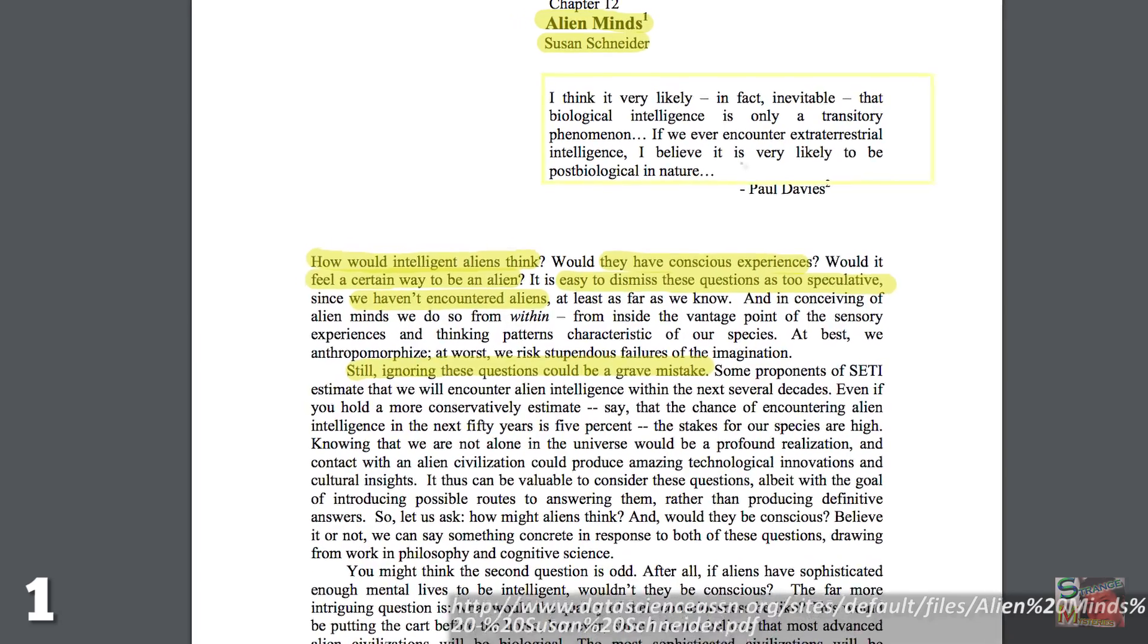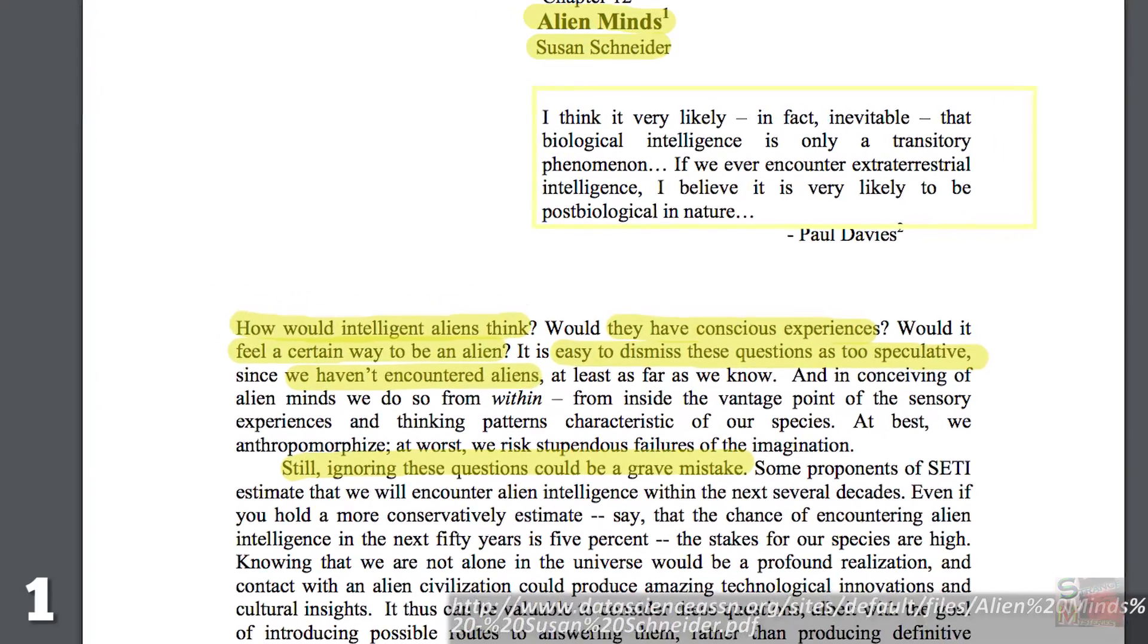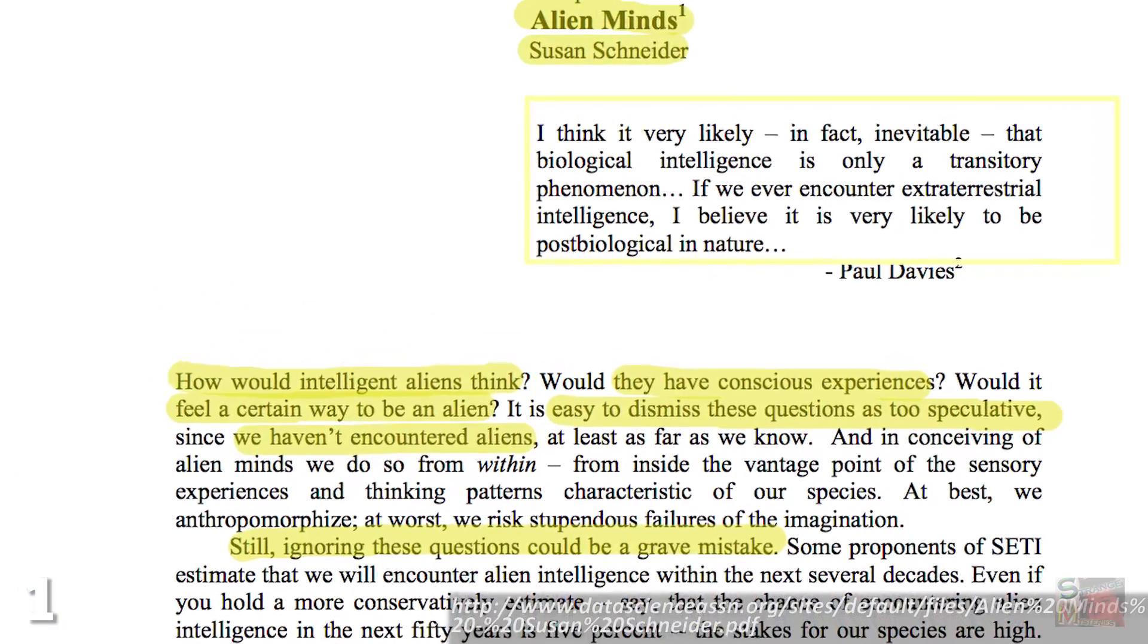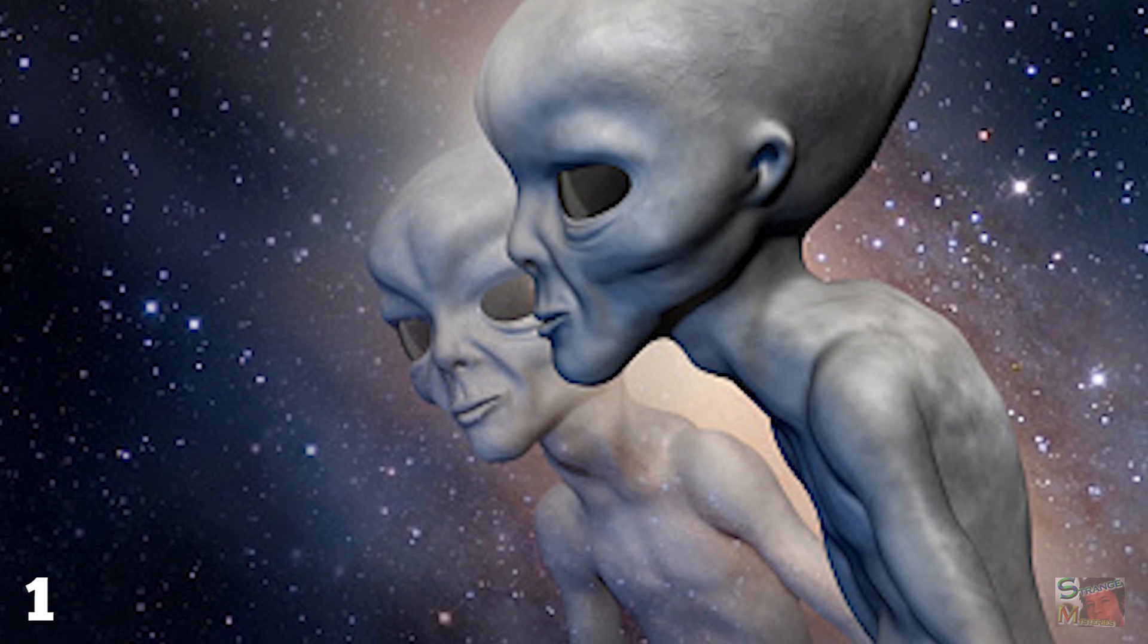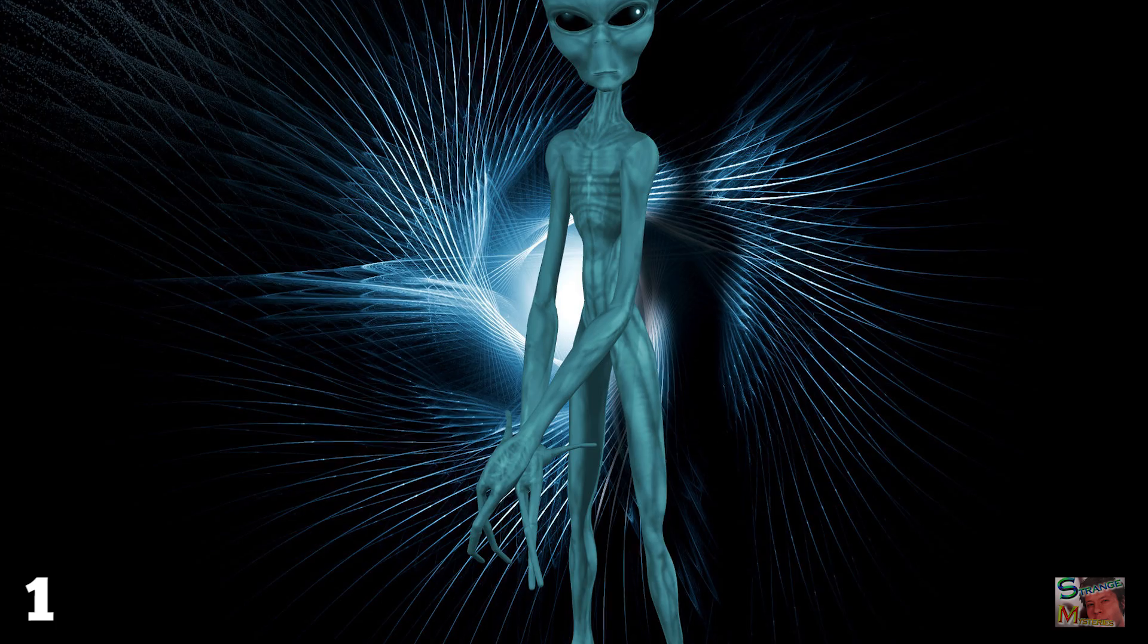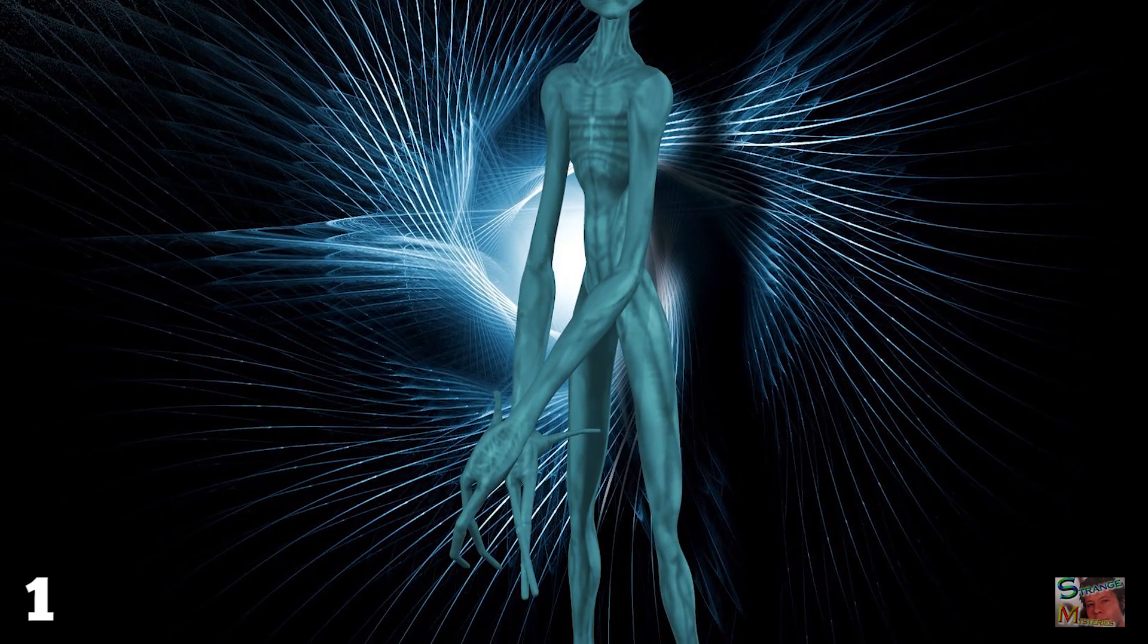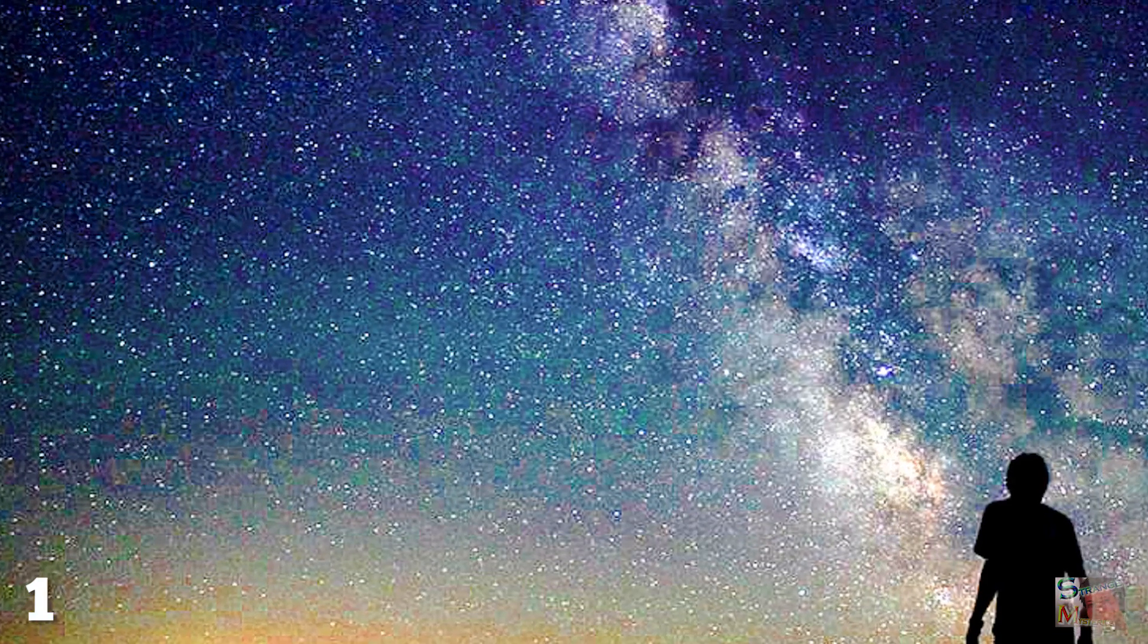Would a sufficiently advanced race shed its biological form and become entirely artificial in nature? Susan Schneider of the University of Pennsylvania thinks so. She was quoted as saying, 'I think it very likely, in fact inevitable, that biological intelligence is only a transitory phenomenon. If we ever encounter extraterrestrial intelligence, I believe it is very likely to be post-biological in nature.' Ever since we've dreamt of alien species, we've imagined strange creatures with tentacles, gray skin, and long probing fingers. But it seems we've been thinking about them in entirely the wrong way.